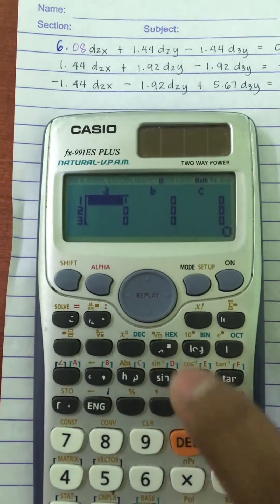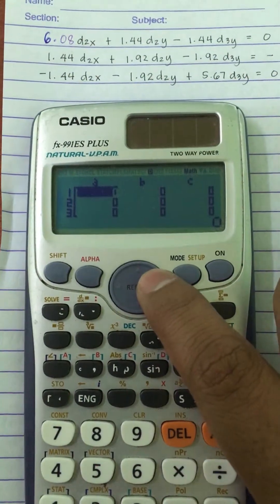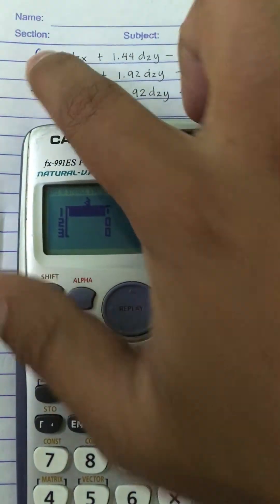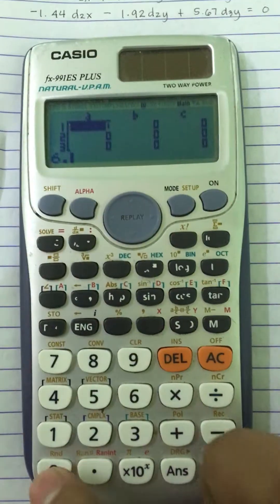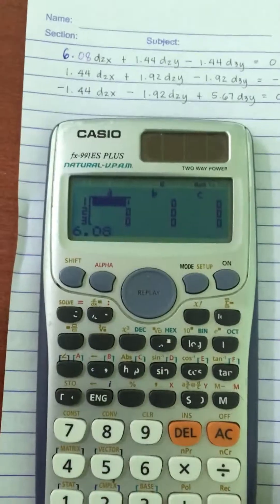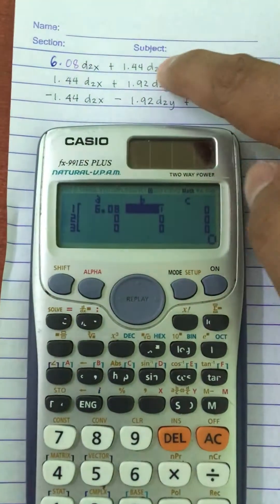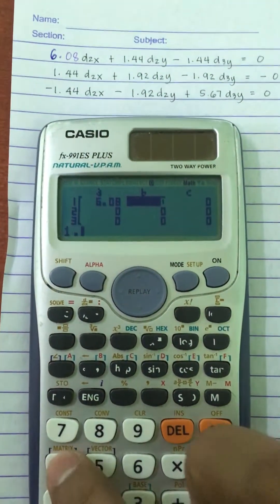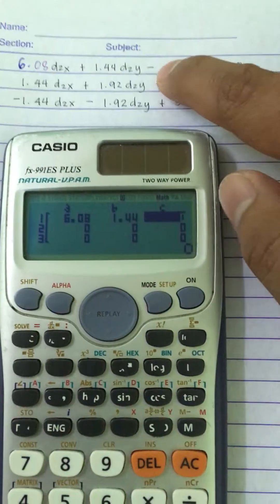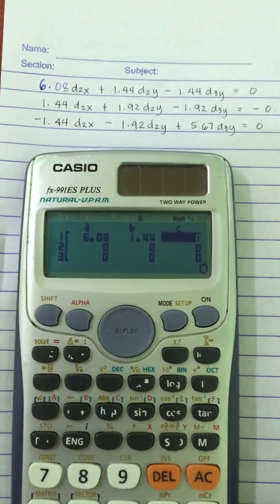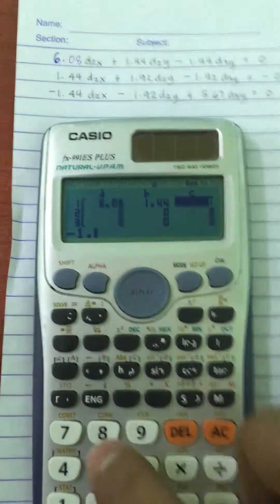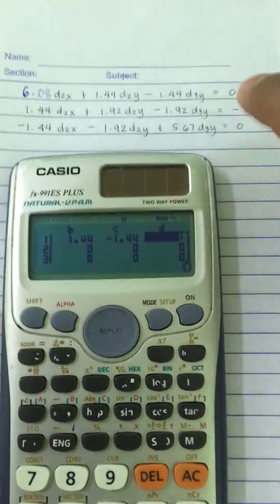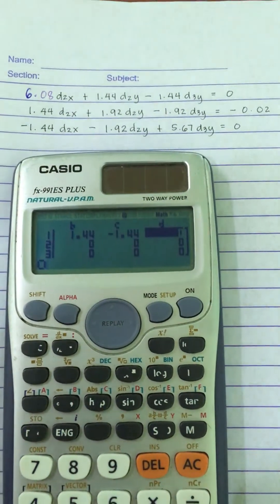So we just need to input the constants. For the first equation, we have 6.08, so we input 6.08 and then press equals. And then the next constant, 1.44, 1.44, and then equals. The next one, we have negative 1.44, minus 1.44, and then our constant term here is 0. So we just press 0, and then equals.